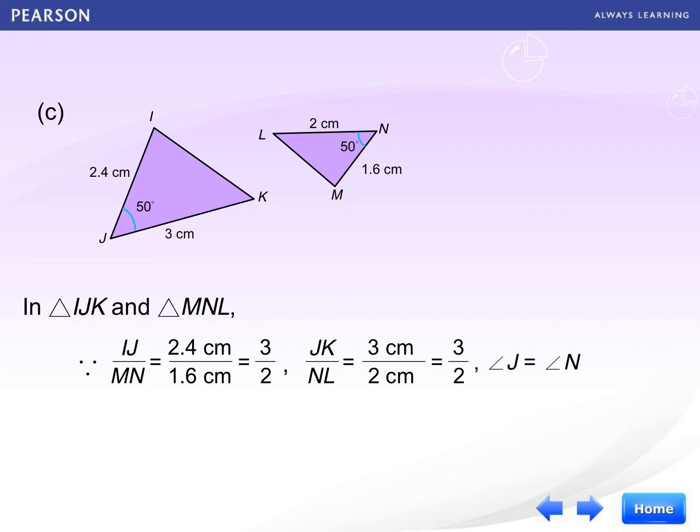And note that the included angles of the two sides of two triangles, which is angle J and angle N, both are equal to 50 degrees. So angle J equals to angle N. Therefore, we can say that triangle IJK is similar to triangle MNL. Then you have to write down this: ratio of two sides, included angle.